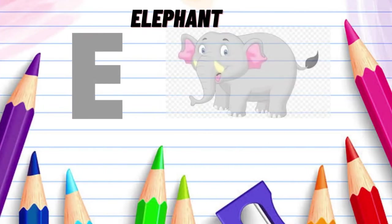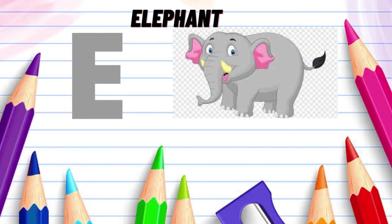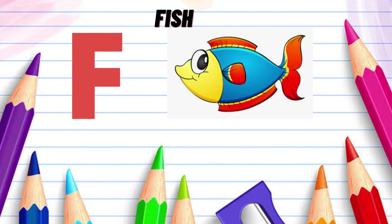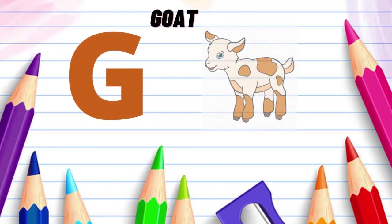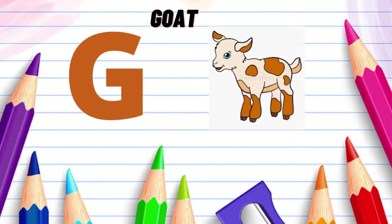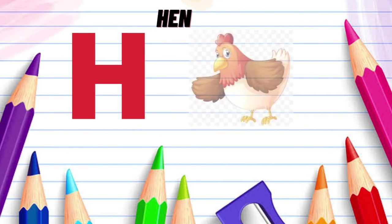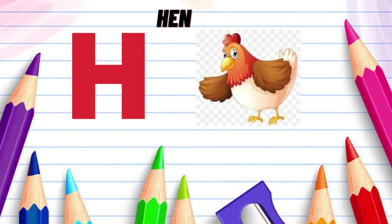D for elephant, F for fish, D for goat, H for end.